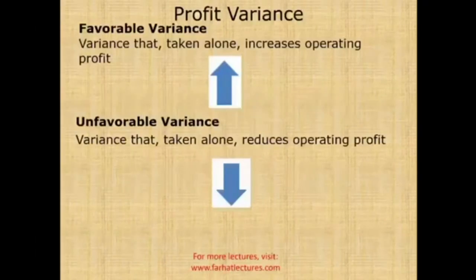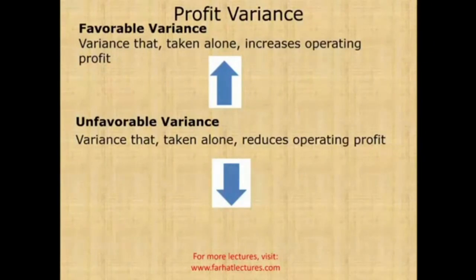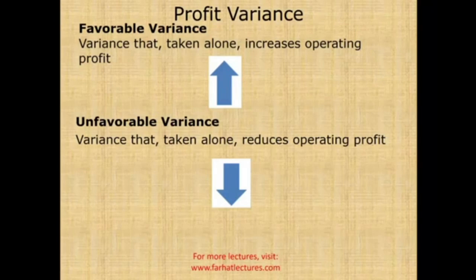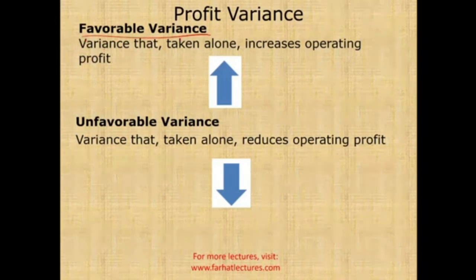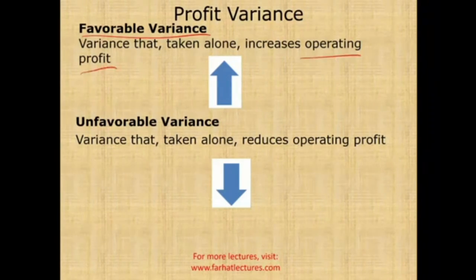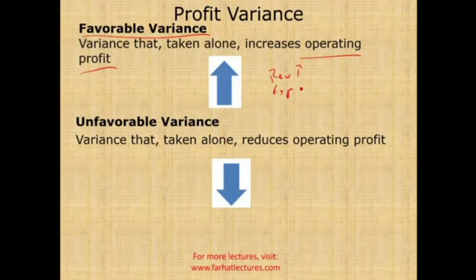In this session, we're going to introduce new terms: favorable variance and unfavorable variance. How do we know if something is favorable or unfavorable? A variance is favorable when, taken alone, it increases operating income — meaning you either have more revenues or less expenses.